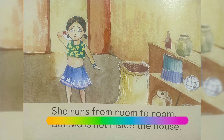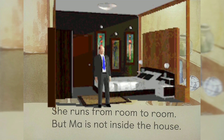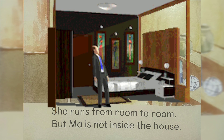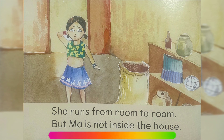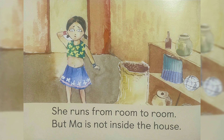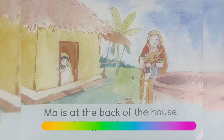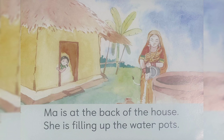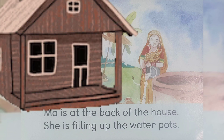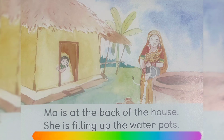She runs from room to room. Sita apni mamma ko dhundhne ke liye ek kamre se doosre kamre tak dhorti rehti hai. But maa is not inside the house. Lekin Sita ki mamma ghar ke andar nahi hai. Maa is at the back of the house. Sita ki mamma ghar ke pichhe hai.